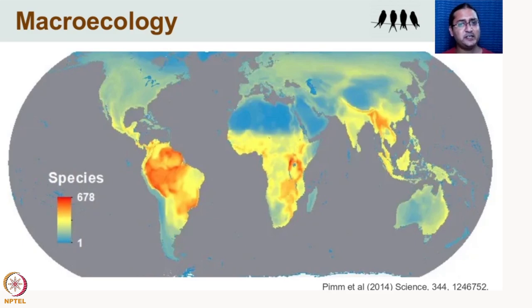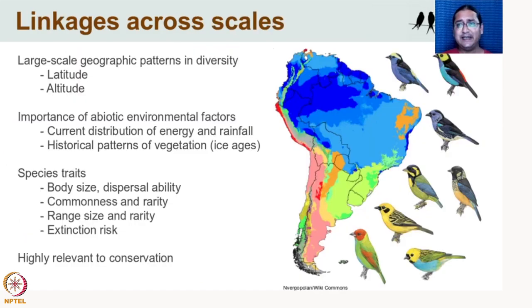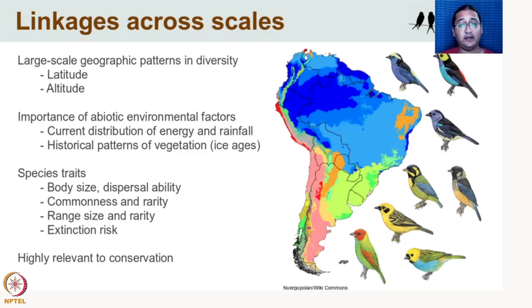To recap: macroecology asks questions about species richness and diversity patterns at large spatial scales — why there are more species in the tropics, and what is the relationship between elevation and species richness. It links ecology across scales, connecting large-scale geographic patterns (latitude, altitude), abiotic factors (productivity, energy distribution, rainfall, historical climate), and species-level attributes (body size, dispersal ability, rarity, commonness, range size, extinction risk). Macroecology is becoming highly relevant to conservation. Thank you — that was macroecology.